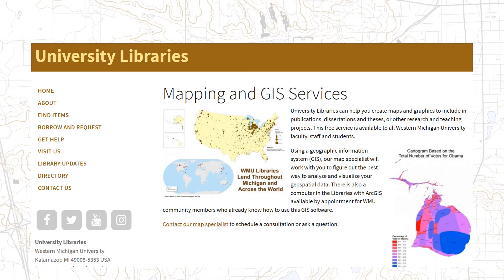Before I get into explaining what GIS is and how it can help with your research and publication needs, I want to briefly emphasize that the mapping service we have here at WMU Libraries is free for all WMU community members. There is no cost associated with my time. If you have an extremely rare or expensive data set that you need to procure for your project, there might be a cost associated with that, but my time is complimentary.